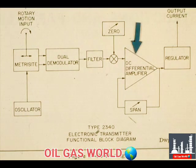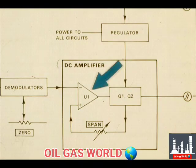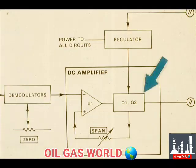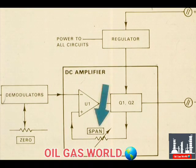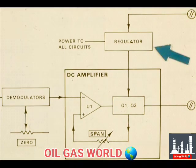The DC voltage output of the demodulators goes through a filter to dampen the effects of process turbulence. The filtered demodulator output then goes to the DC amplifier. The DC amplifier consists of U1, a differential amplifier, Q1 and Q2, which are current controlling transistors, and the span adjustment. The regulator supplies and maintains the constant operating voltage required for the various circuits in the transmitter. For this transmitter, the regulator maintains 10.8 and 6.4 volt supply voltages.